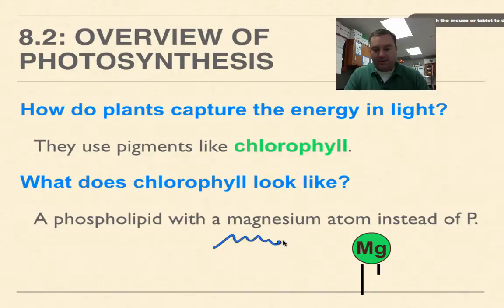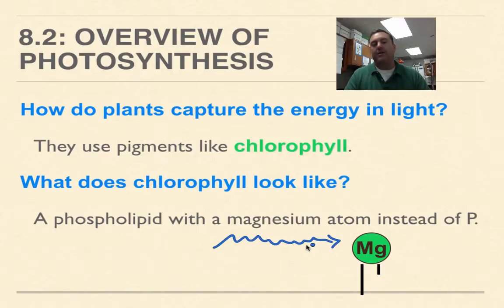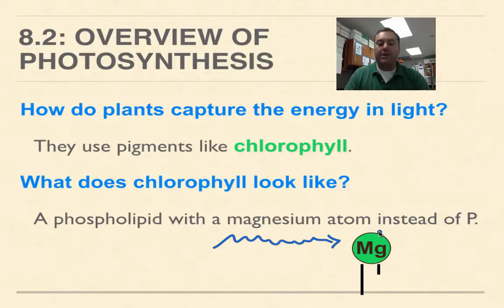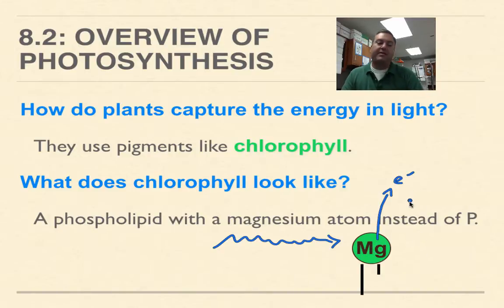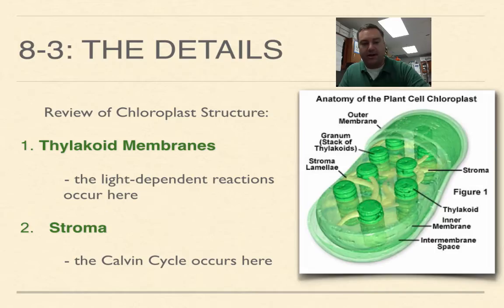Chlorophyll captures light energy in a very special way. A light photon — represented here as a wiggling line — strikes the magnesium atom inside the chlorophyll molecule. Magnesium is a metal, and metals like to give up their electrons. When light hits it, an electron gets excited and pops off, gets picked up by other molecules, and its energy is put to work.